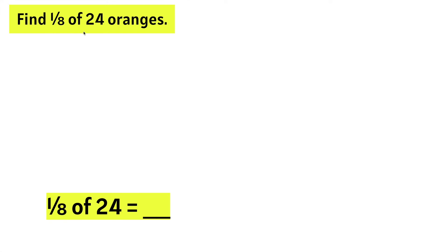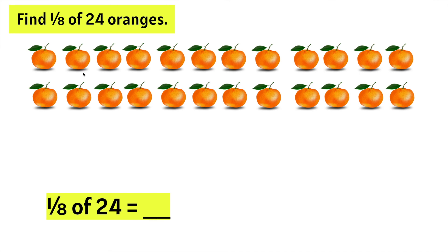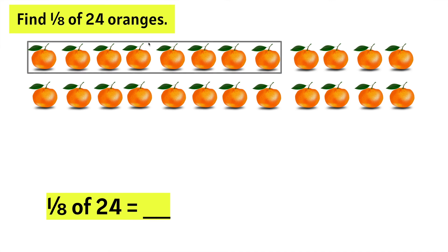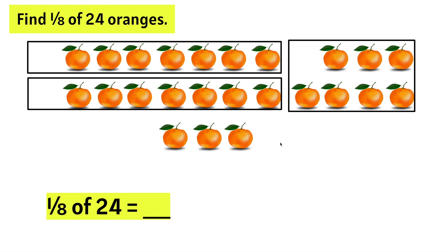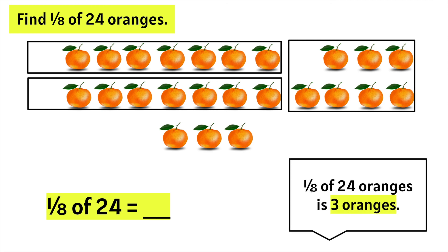Find one-eighth of 24 oranges. We need to find part of a number, or a fraction of a whole. Let's start by making 24 oranges. Remember, we only need one-eighth of them. Let's start by separating them into eight oranges, but we only need one out of every eight. Eight more and we need one out of every eight. Eight more and we need one out of every eight. So, we can say one-eighth of 24 oranges is three oranges. One-eighth of 24 equals three.